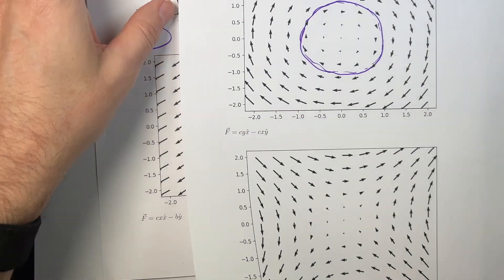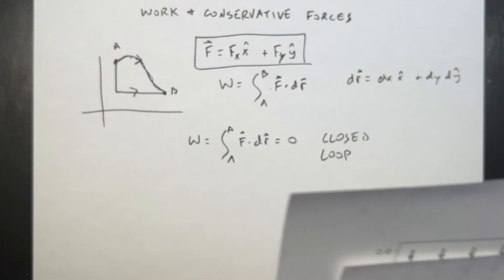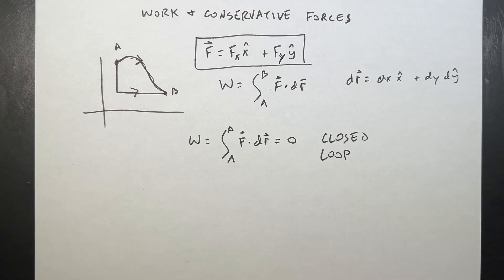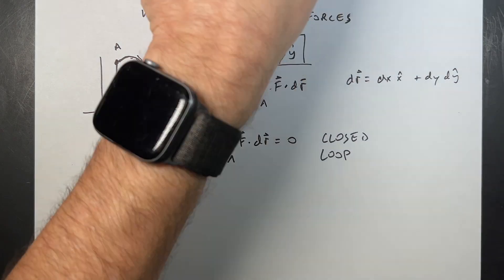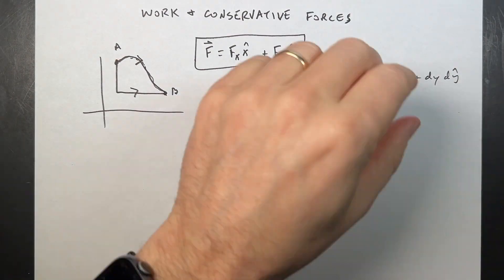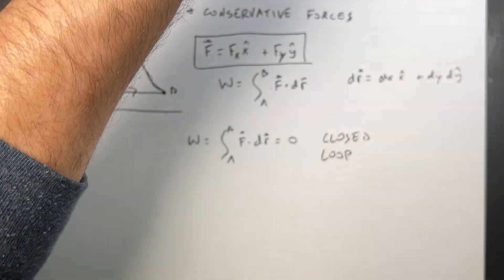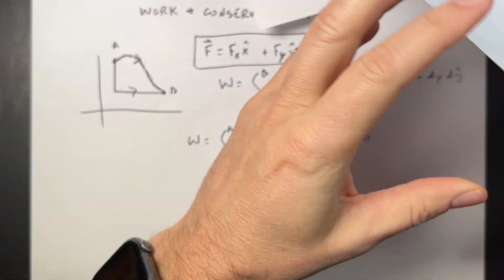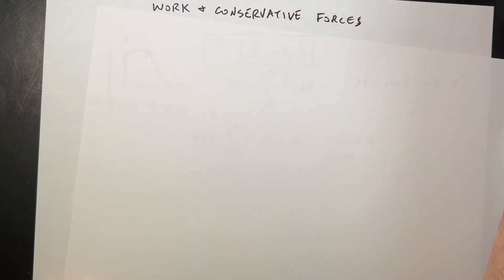If the curl of a function is zero, then it's conservative — that is true, and I want to show that.